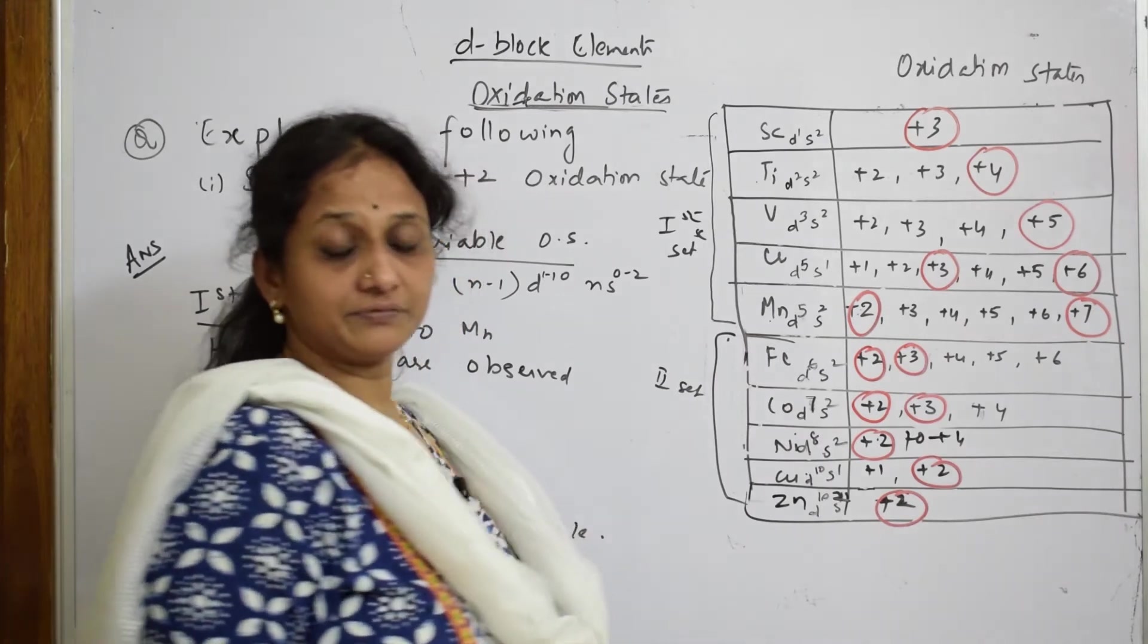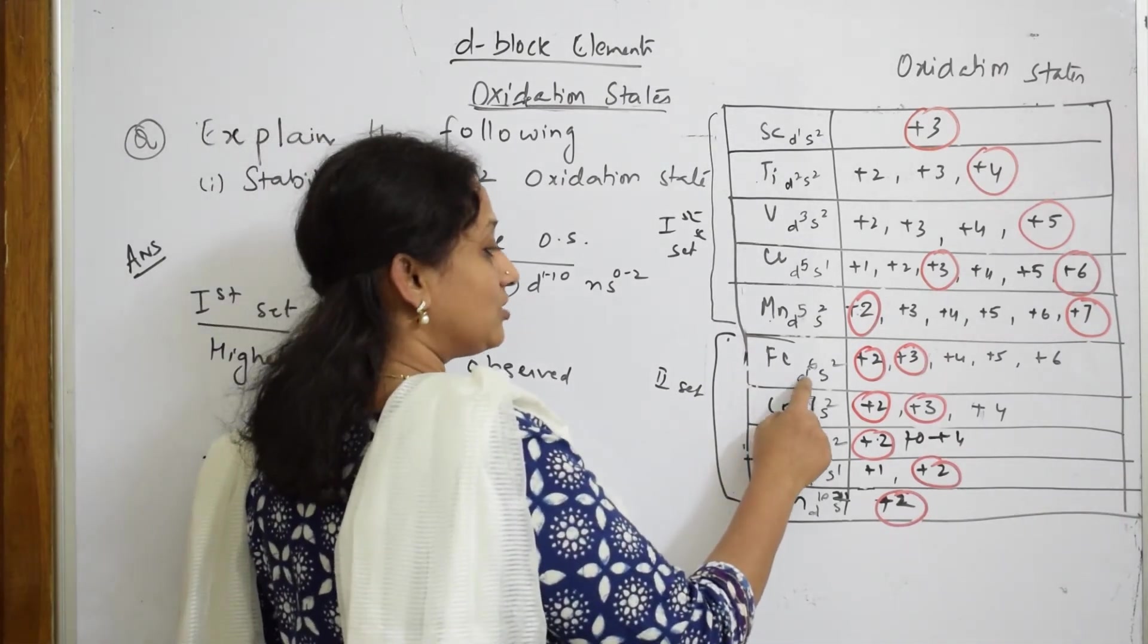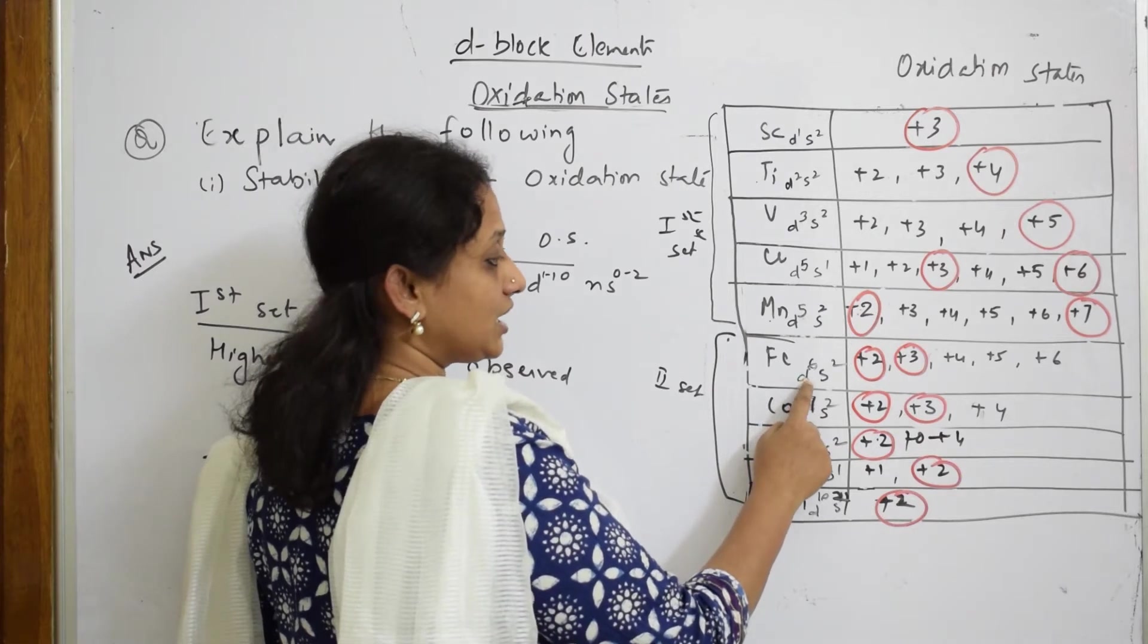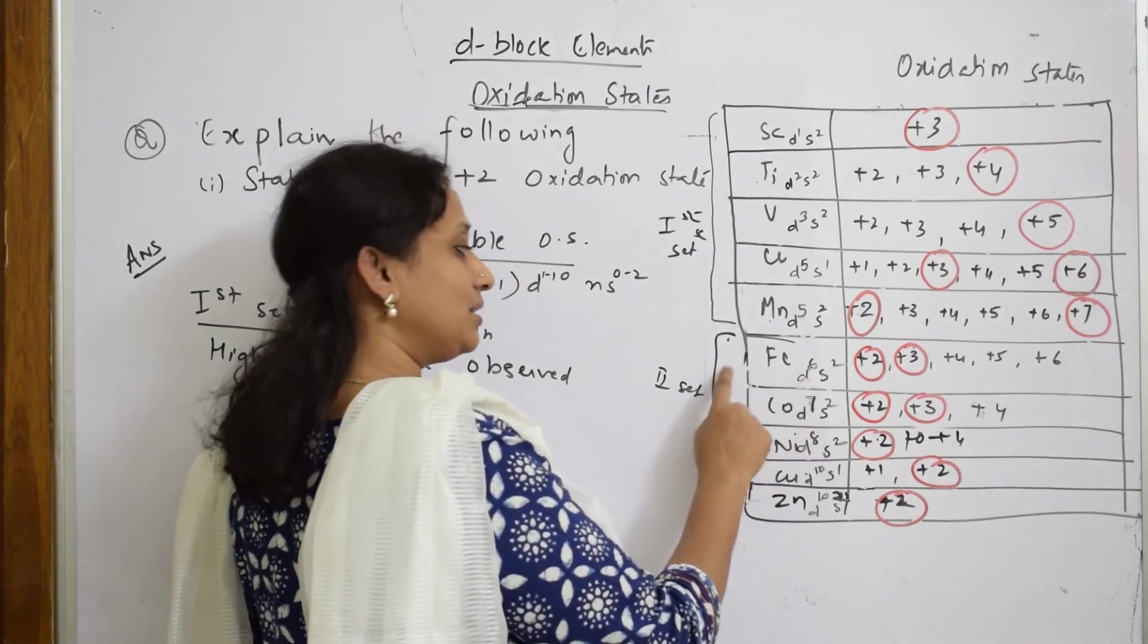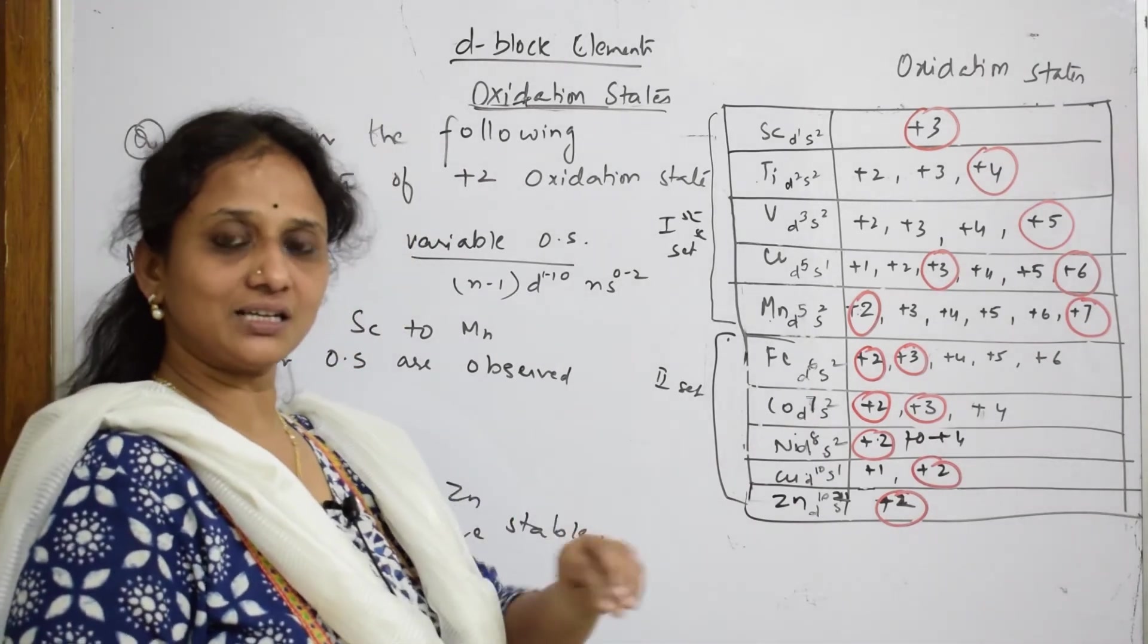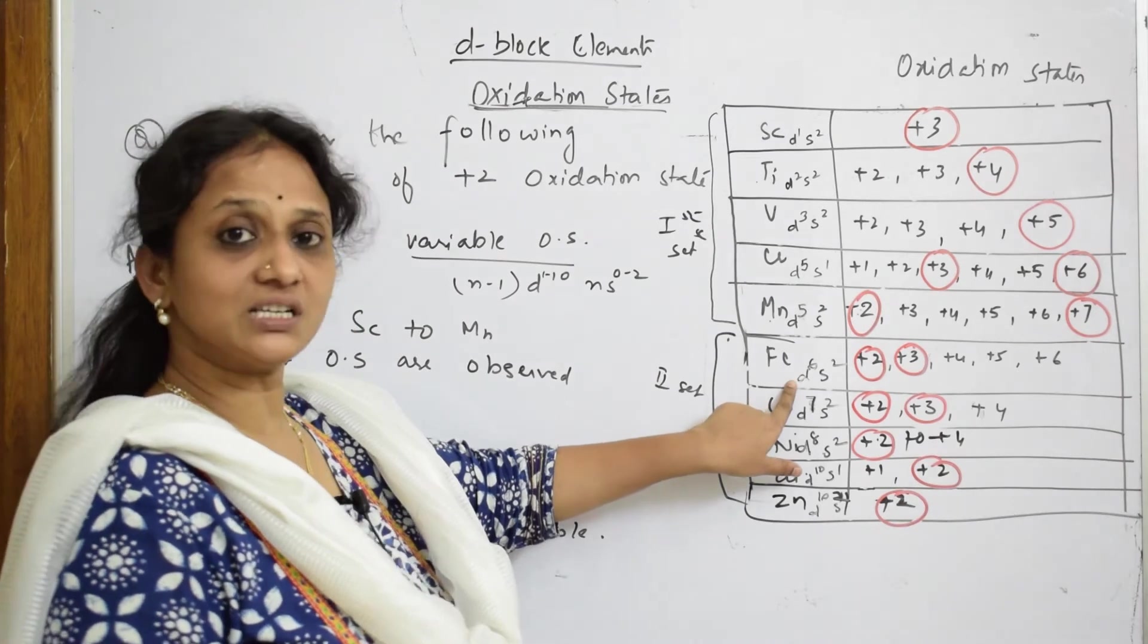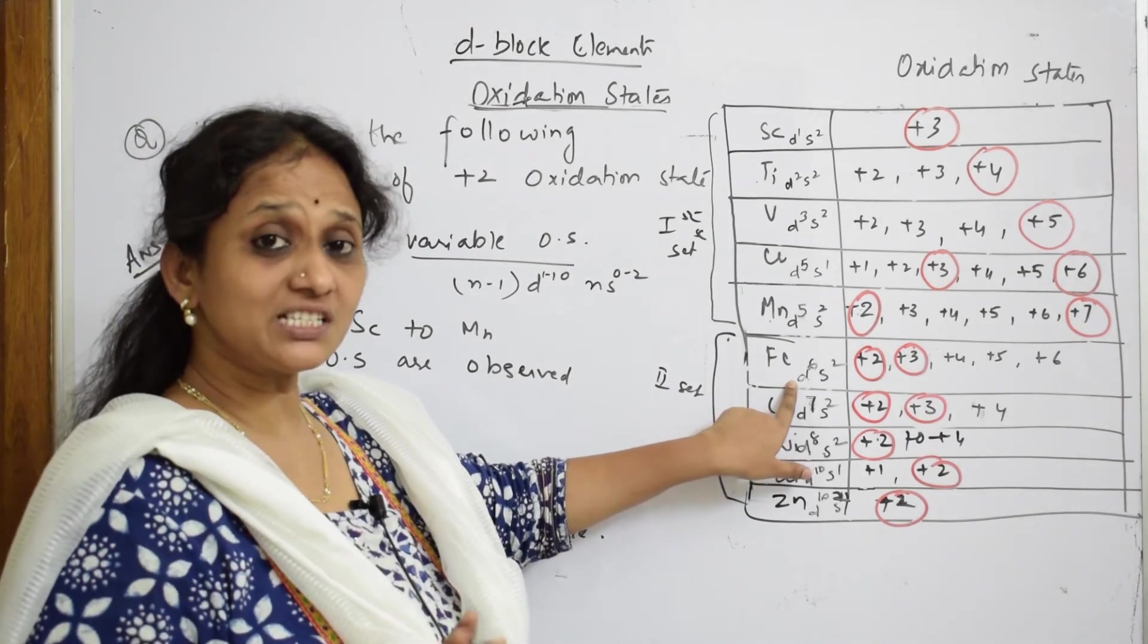But if I'm trying to take out one electron from here further, then it becomes Fe +3. This d electron then becomes 3d5, that is stable. So that stability or that d5 electronic configuration can be attained by overcoming the nuclear attraction from here.